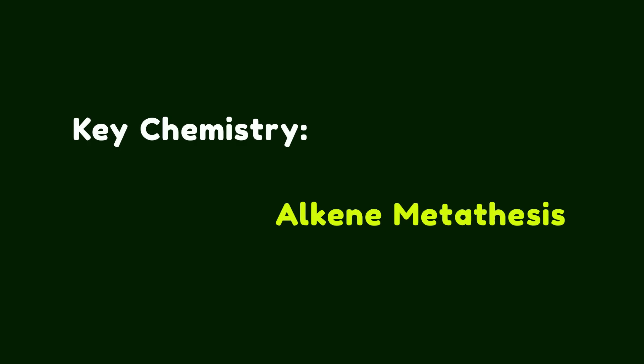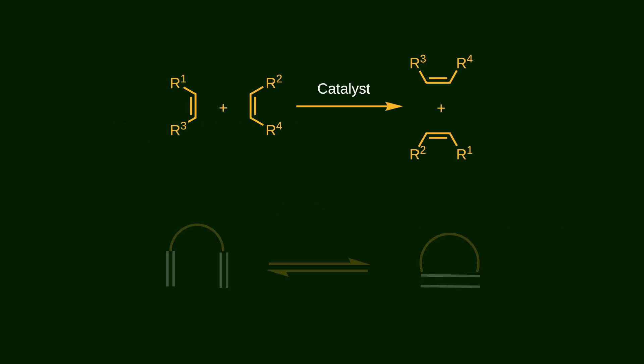The key chemistry of this synthesis route is alkene metathesis. So let's review the mechanism. Generally speaking, in alkene metathesis, two alkenes react with an appropriate catalyst to form two neo-alkenes.